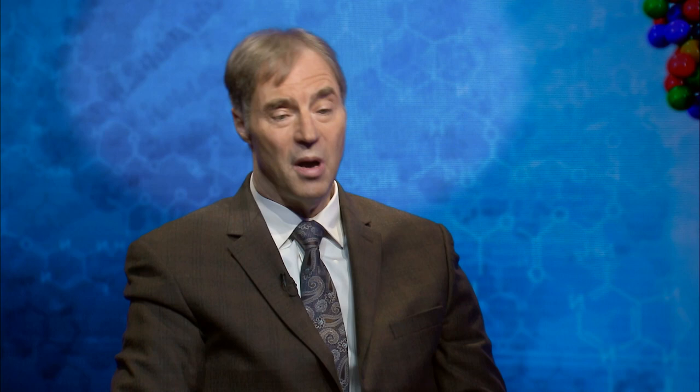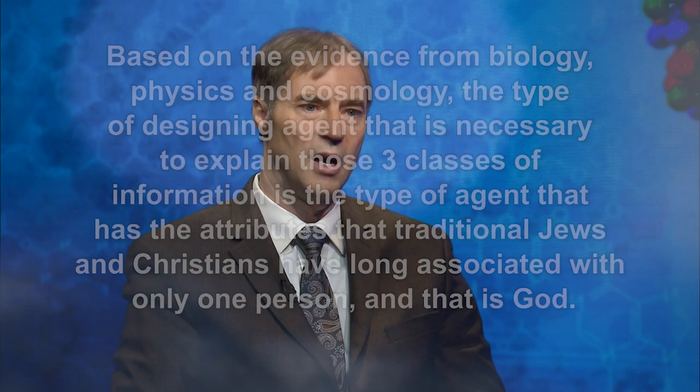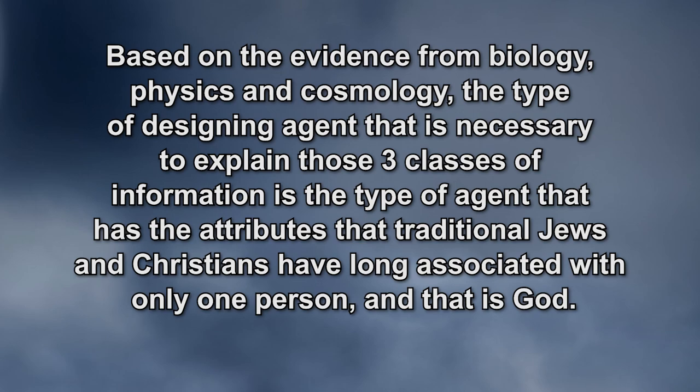Intelligent design basically says we're talking about God. Well, initially it just infers to an intelligent agent. But in my most recent book, when we talk about not only the evidence from biology but also the evidence from physics and cosmology, the type of designing agent necessary to explain those three classes of information is the type of agent that has the attributes that traditional Jews and Christians have long associated with one and only one person — and that is the deity, with God.